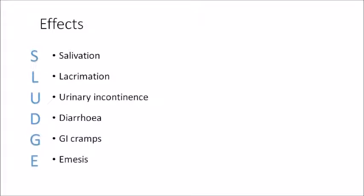The effects of cholinergic drugs can be remembered using the acronym SLUDGE: salivation, lacrimation, urinary incontinence, diarrhea, GI cramps, and emesis. In simple terms, cholinergic drugs increase all the secretions when the parasympathetic system is overstimulated.